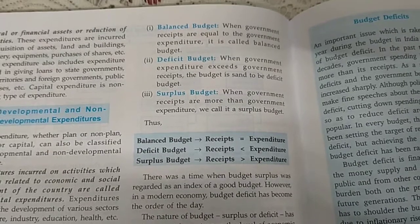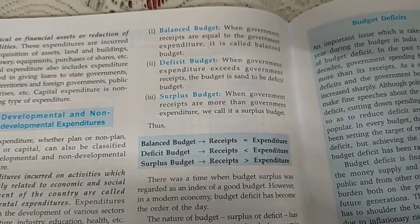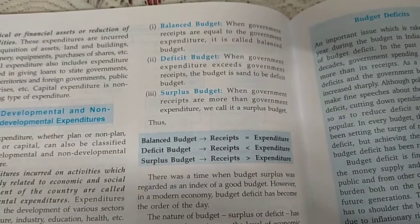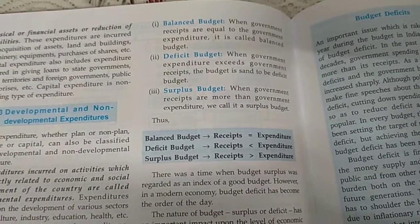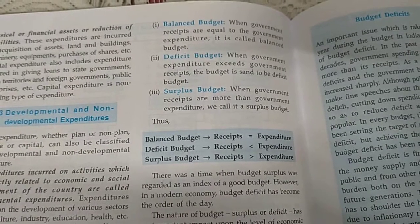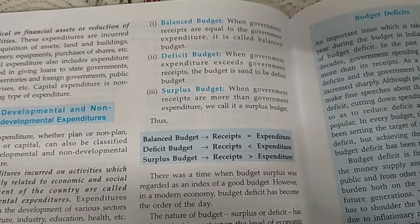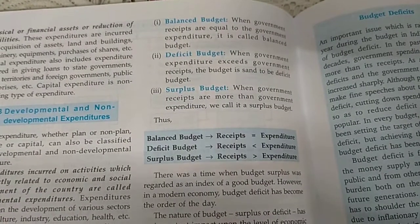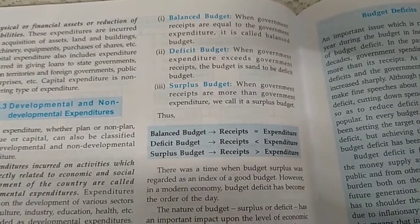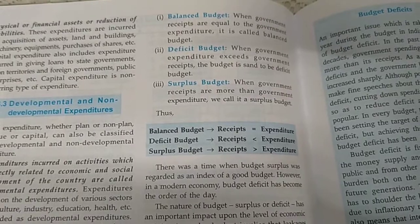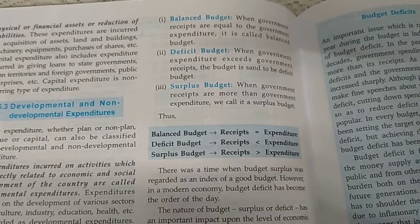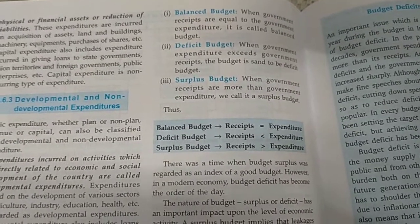And what is a surplus budget? When government receipts are more than government expenditure, we call it a surplus budget. Surplus budget means receipts are more than the expenditure.